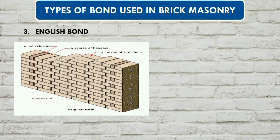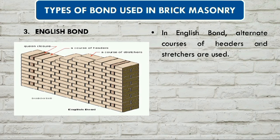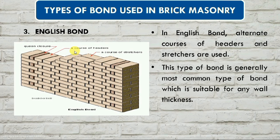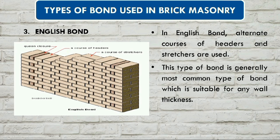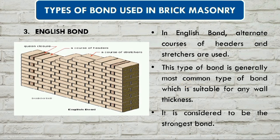Now this is English bond. English bond uses alternate headers and stretchers — this is a stretcher and this is a header, each type alternating. This bond is commonly used. If there is any thickness in the wall, the English bond is used. It is a strong bond.